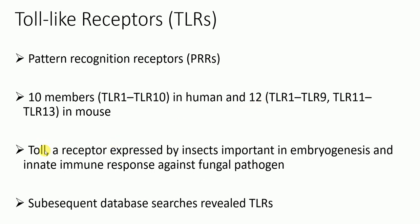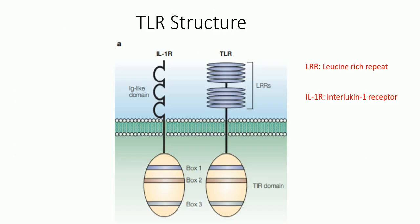What is actually 'Toll'? Toll is a receptor expressed by insects, and it has been found to be really important in embryogenesis and innate immune response against fungal pathogens in insects. When they first discovered this Toll, they did subsequent studies using different database sources and lab experiments, and they found out several toll-like receptors as explained earlier.